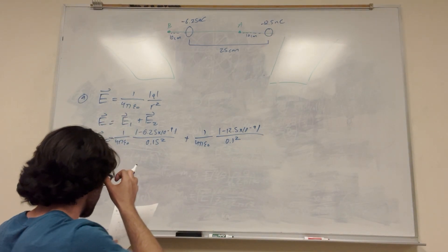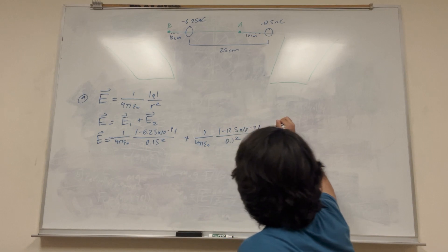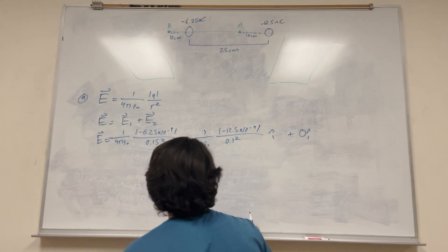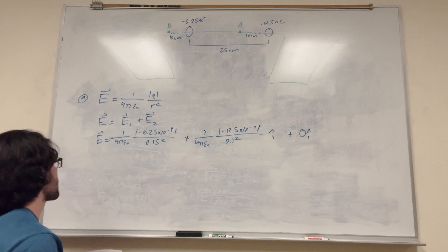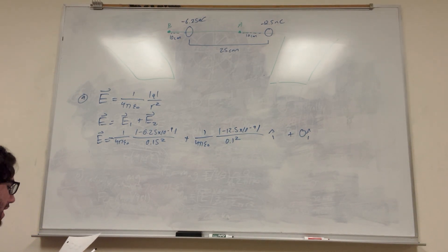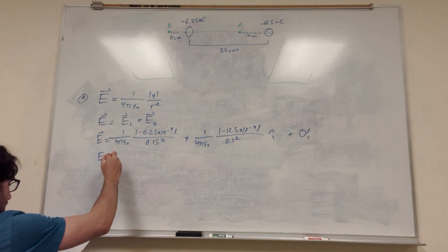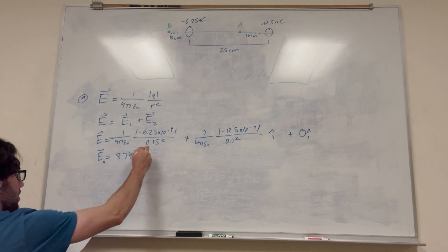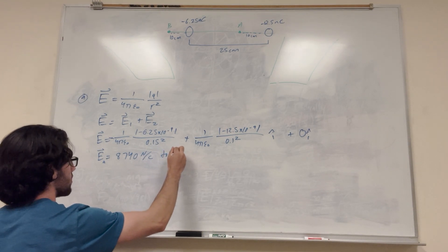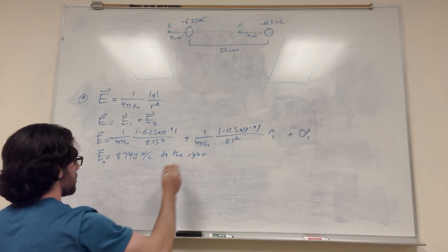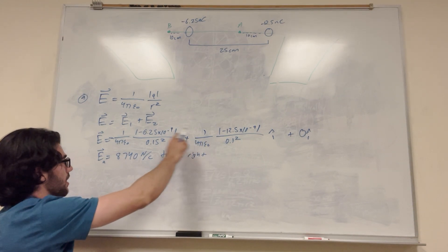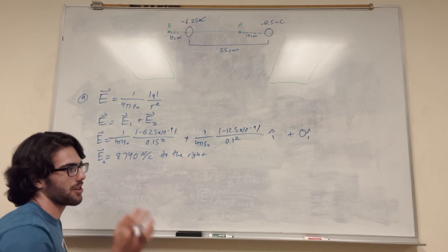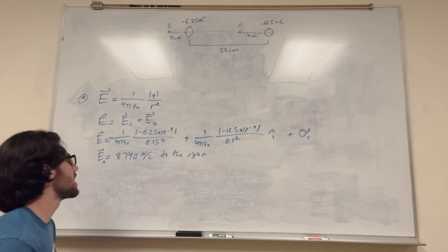This is just in the i direction — there's nothing acting on it in the j direction, nothing pulling it up or down. If you calculate this, you're going to get E at A is equal to 8,740 newtons per coulomb to the right. You get a positive number because this term is greater, so it pulls to the right. If it's positive, it's going right; if negative, it's going left. That's why we use the negative and positive signs. So that's part A.